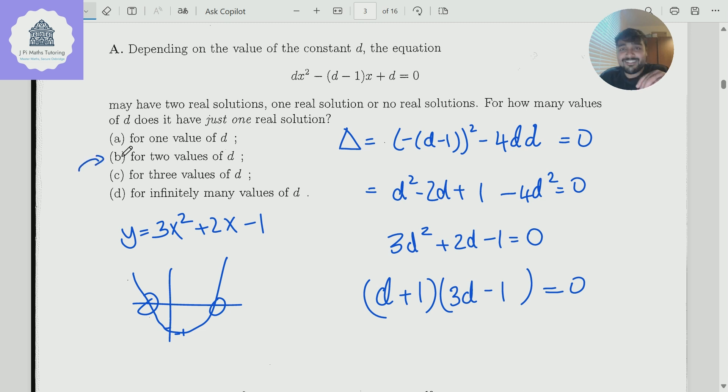Or so you might think. That is what most students would have done for this, but there's actually another value of d. What's gone wrong? So I really encourage you to pause the video here. If this is the method you did and you thought the answer was 2, pause the video here to see what's gone wrong.